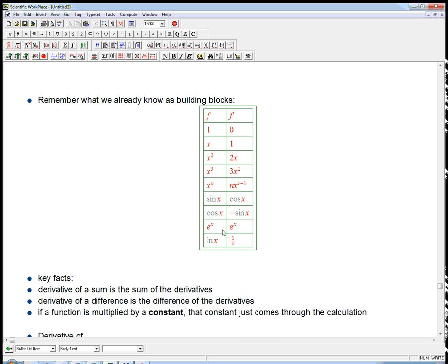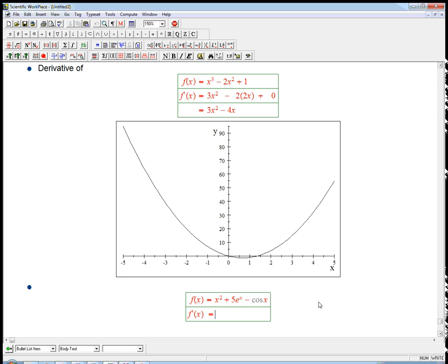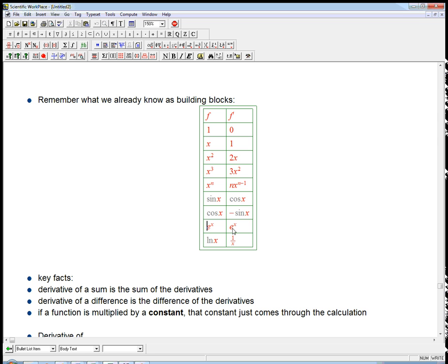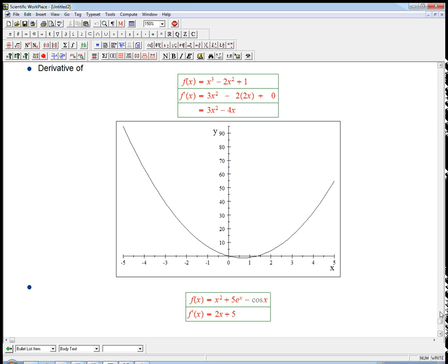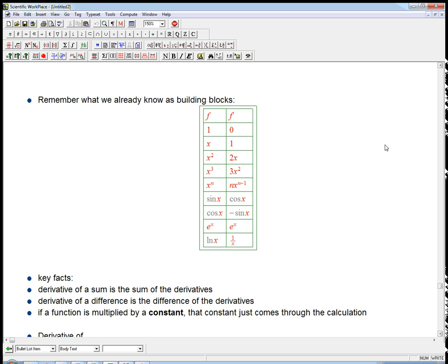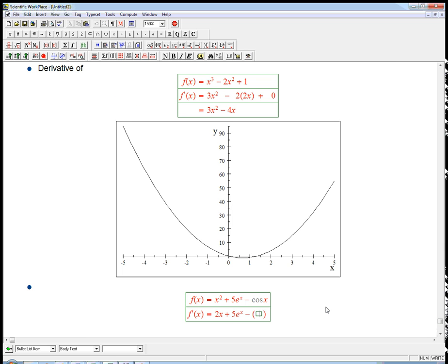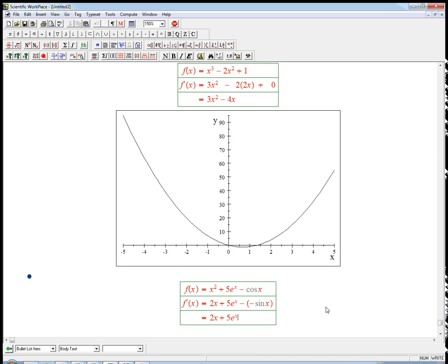Plus 5 times whatever the derivative of e to the x is. That e to the x was the super cool one - e to the x was exactly itself. Hard to overemphasize how important and cool that is. And then minus the derivative of cosine. That's a little tricky. Derivative of cosine turned out to be minus sine when we looked at it carefully, and so those minuses are going to cancel. And so we're going to get 2x plus 5e to the x plus sine x.